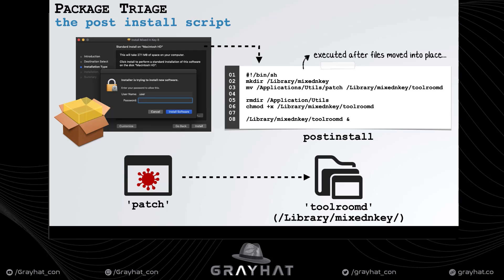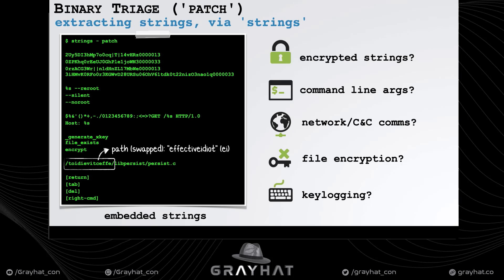One of the first things I do when analyzing an unknown, potentially malicious macOS binary is run the strings command to extract embedded ASCII strings, which often reveals the malware's potential capabilities. Running strings on the patch binary reveals things that look like encrypted strings, command-line arguments, strings related to network or command-and-control communications, perhaps key logging, file encryption, and a path that reveals the malware author's internal name: Effective Idiot, or EI for short.